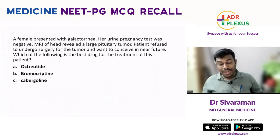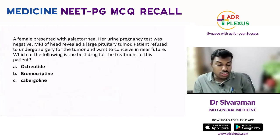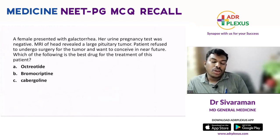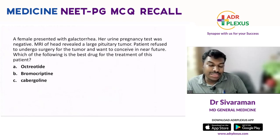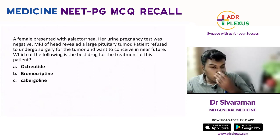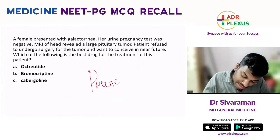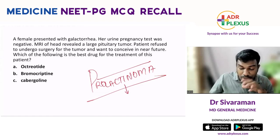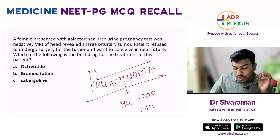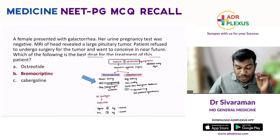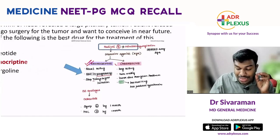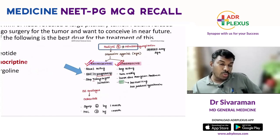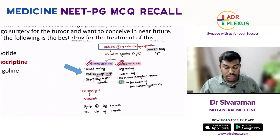A female patient with galactorrhea, negative urine pregnancy test, MRI showing a large pituitary tumor — patient refuses surgery and wants to conceive in the future. Which is the best drug? Options: octreotide, bromocriptine, cabergoline. This is prolactinoma. Prolactin level is more than 200 for microadenoma and more than 400 for macroadenoma. If the patient is willing for pregnancy, go for bromocriptine or cabergoline. Screen with 2D echo to prevent valvular fibrosis with bromocriptine. The answer is bromocriptine.